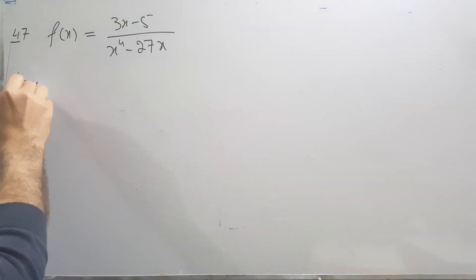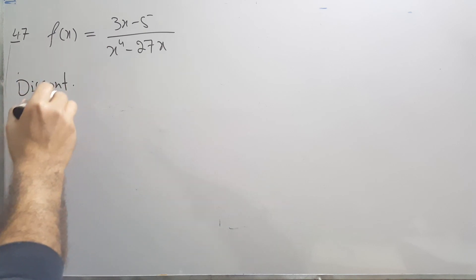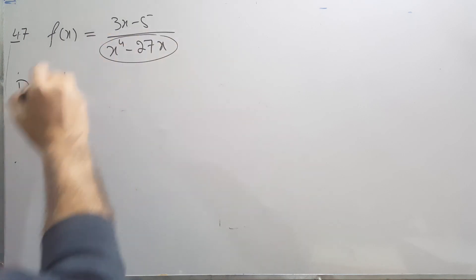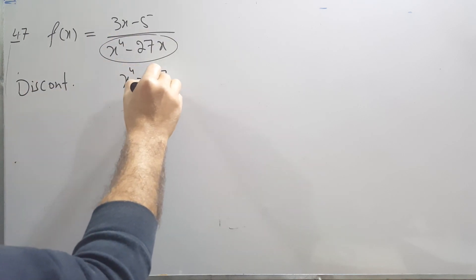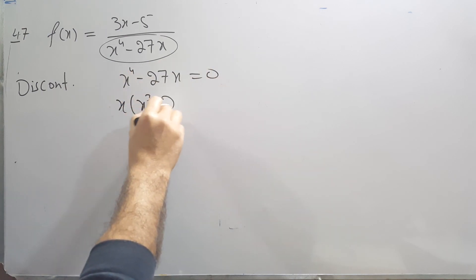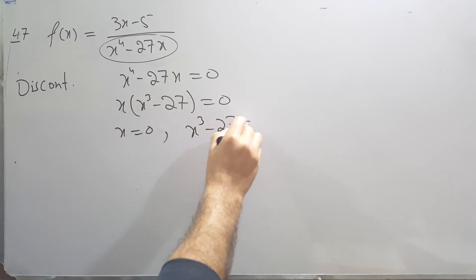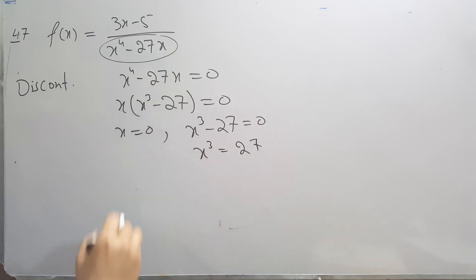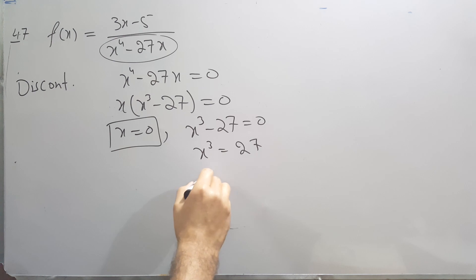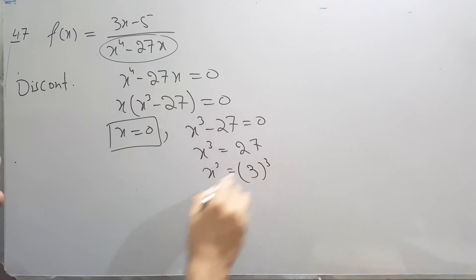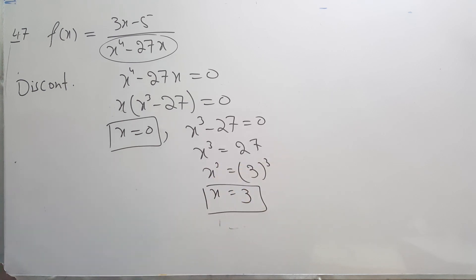Question 48 is the same type as 46 and 45, so solving question 47. The denominator set to zero: x is common, giving x(x³ minus 27) equals zero, so x equals 0 or x³ equals 27. Writing 27 as 3 cubed and taking the cube root of both sides gives x equals 3. So there are two discontinuity points: x equals 0 and x equals 3. That covers how to solve any discontinuity problem of these types. Thank you.